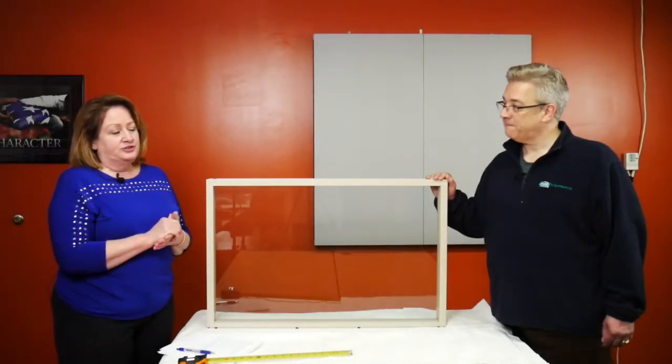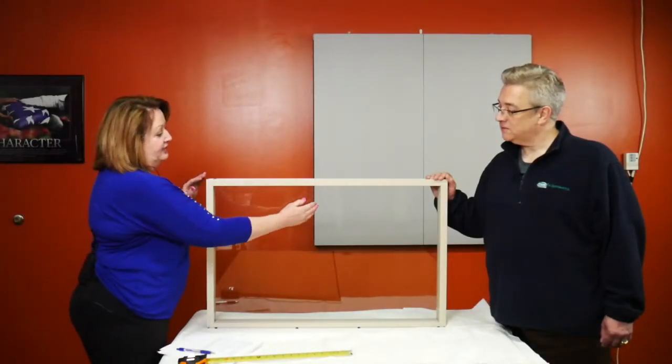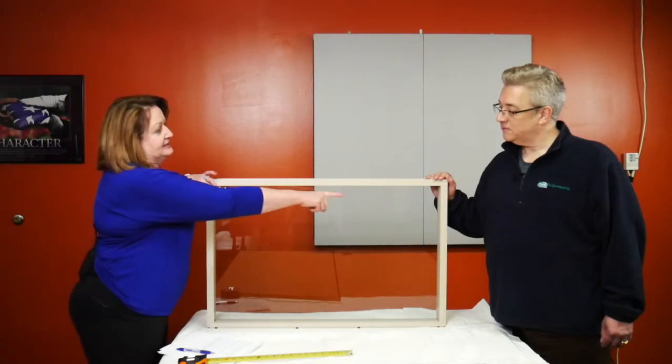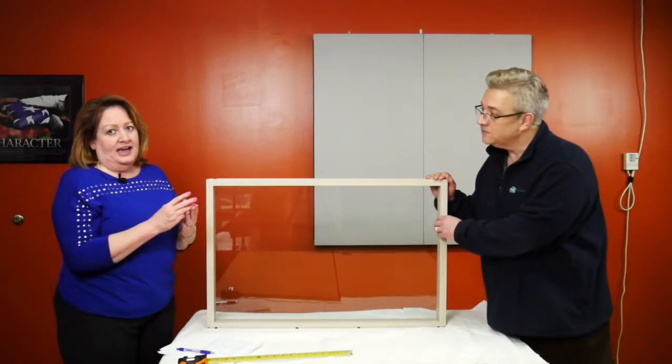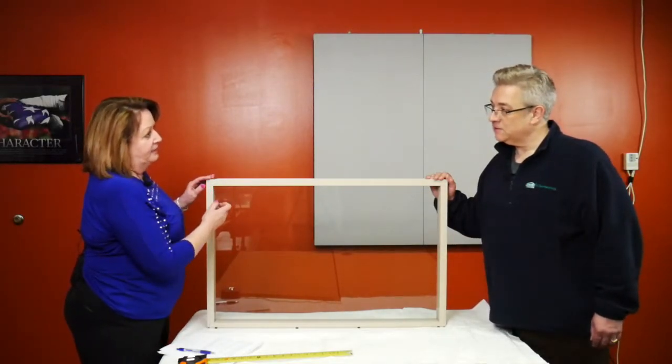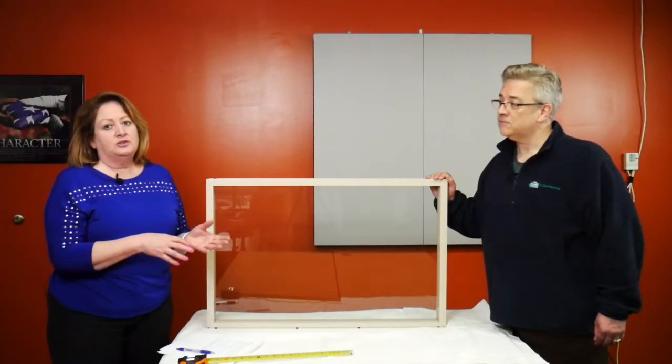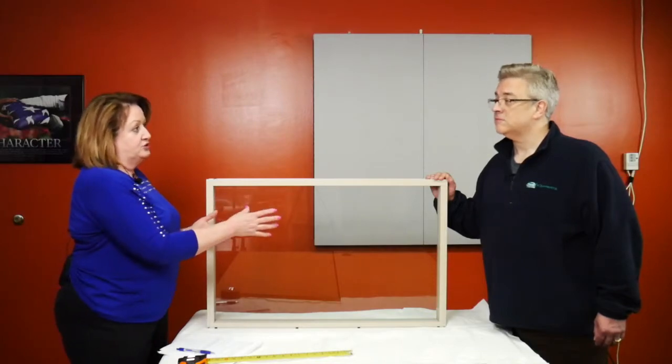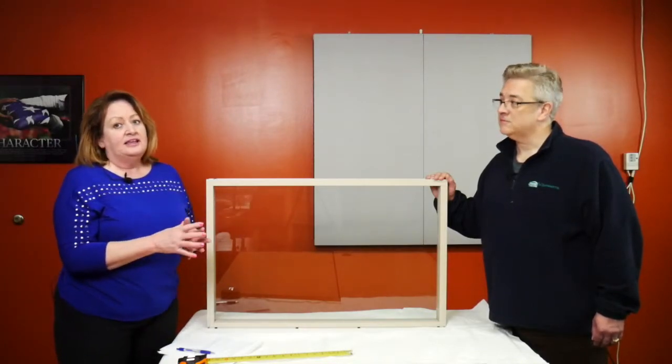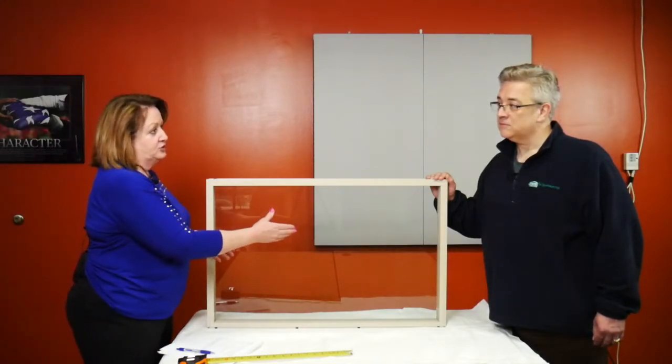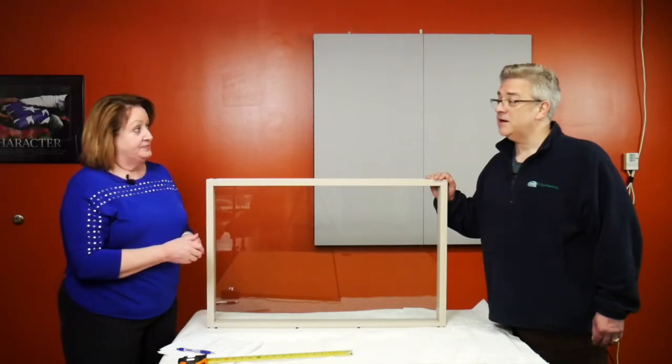First, we're going to measure the width frame to frame inside, and we're going to measure three times - at the top, the middle, and the bottom. The reason we do this is we want to make sure that the window's square. If not, then we're going to take the smallest measurement of the width and use that.